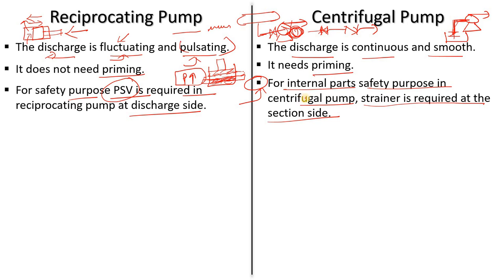In a centrifugal pump, a strainer is used at the suction side to remove foreign particles from the fluid so dust or particles don't enter the impeller or casing and damage them. Different strainer types are used: Y-type, bucket-type, conical-type, and straight-type strainers.